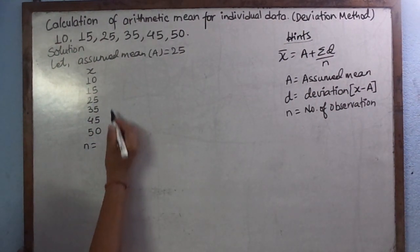Small n equals to number of observations: 1, 2, 3, 4, 5, 6.